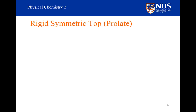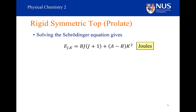Let's have a look at a prolate symmetric top in a little bit more detail. In the following discussion I'm not going to include centrifugal distortion. When we solve the Schrödinger equation for the rotational problem for the prolate top, we get the term B times J(J+1). This is the familiar term that we get for diatomic and linear polyatomic molecules, but notice we get an additional term here.